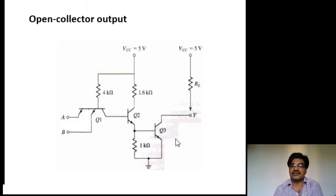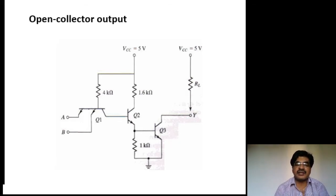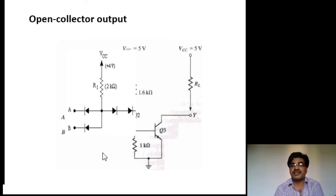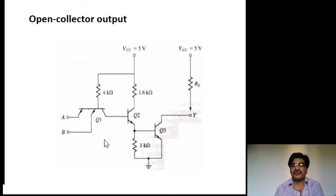Q3 is as it is — transistor Q3 is similar to the transistor in the DTL logic. So this is the diode circuit replaced by transistors Q1 and Q2.